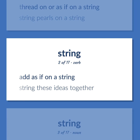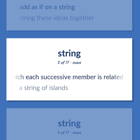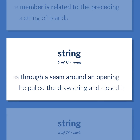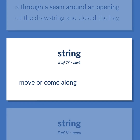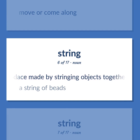Add as if on a string. String these ideas together. A sequentially ordered set of things or events or ideas in which each successive member is related to the preceding. A string of islands. A tie consisting of a cord that goes through a seam around an opening. He pulled the drawstring and closed the bag. Move or come along. A necklace made by stringing objects together. A string of beads.